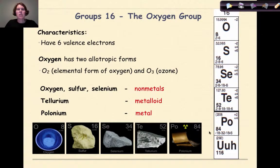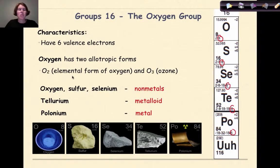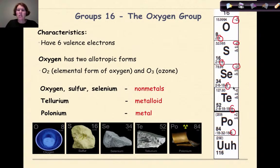Group 16 is the oxygen group. These will have six valence electrons, so we see the number six at the end of all their electron configurations. Oxygen has two primary allotropic forms: diatomic oxygen, which is the elemental form we need to survive, and O3, which is ozone. They commonly gain two electrons to get a full outer shell of eight electrons. Oxygen, sulfur, and selenium are non-metals; tellurium is a metalloid; and polonium is a metal.